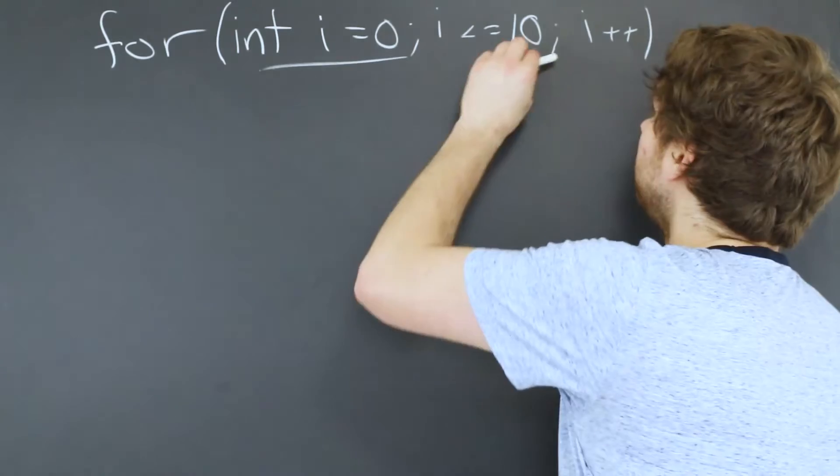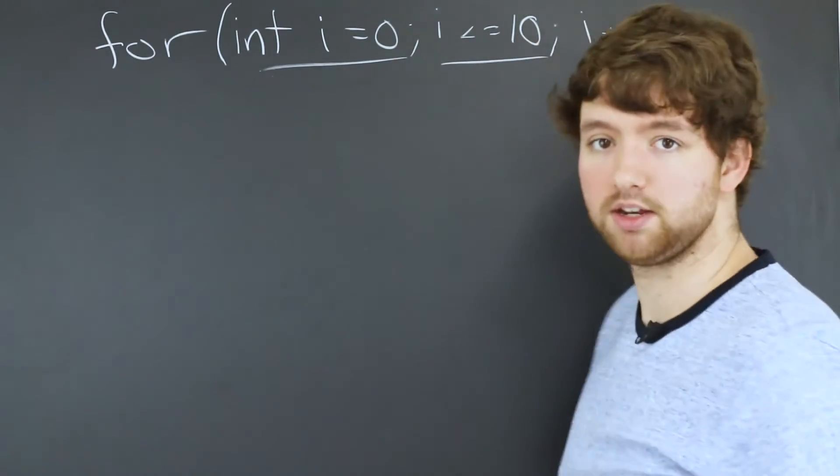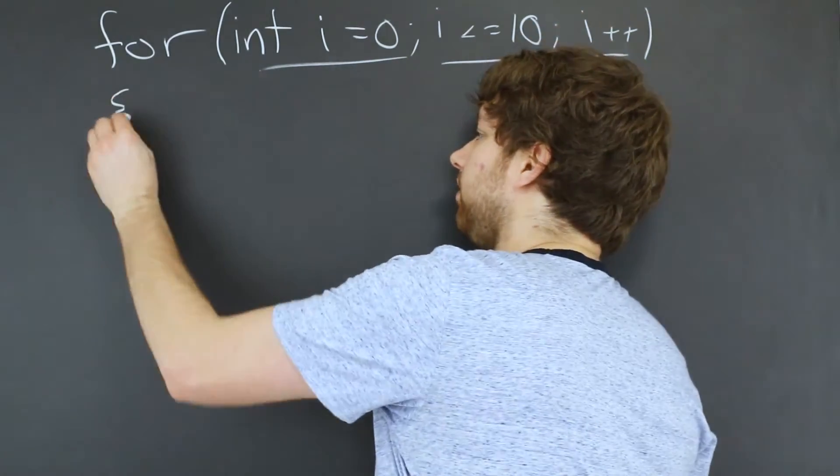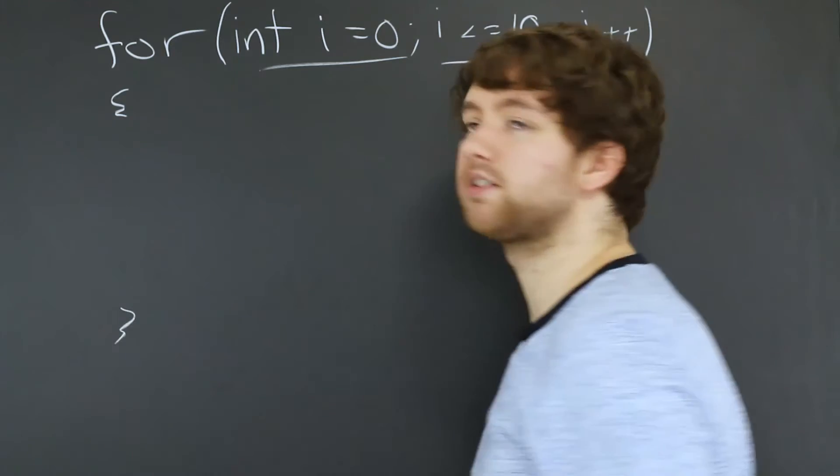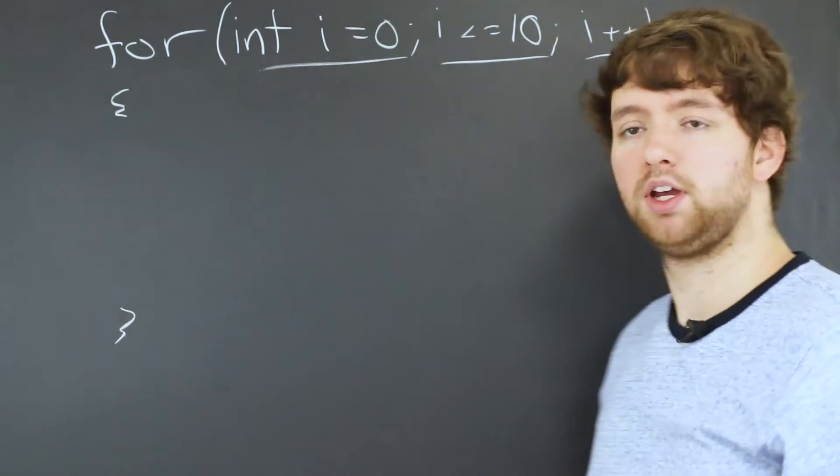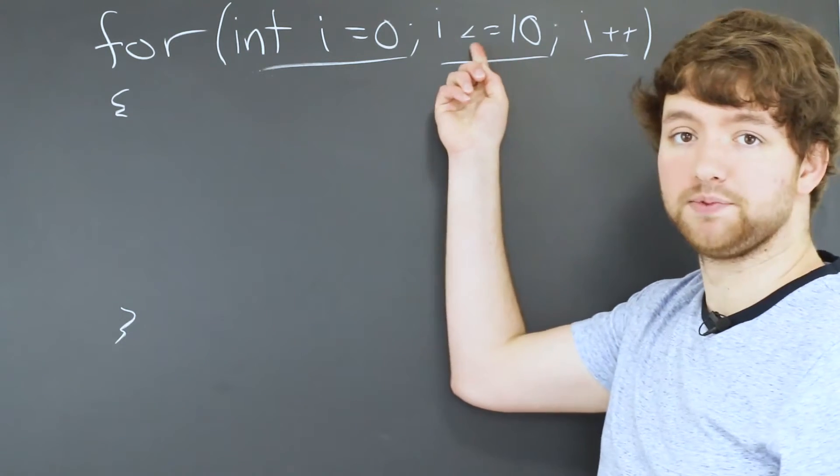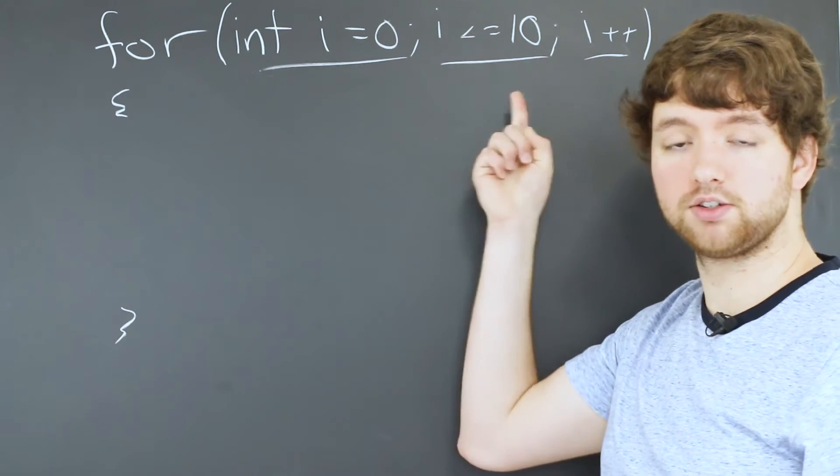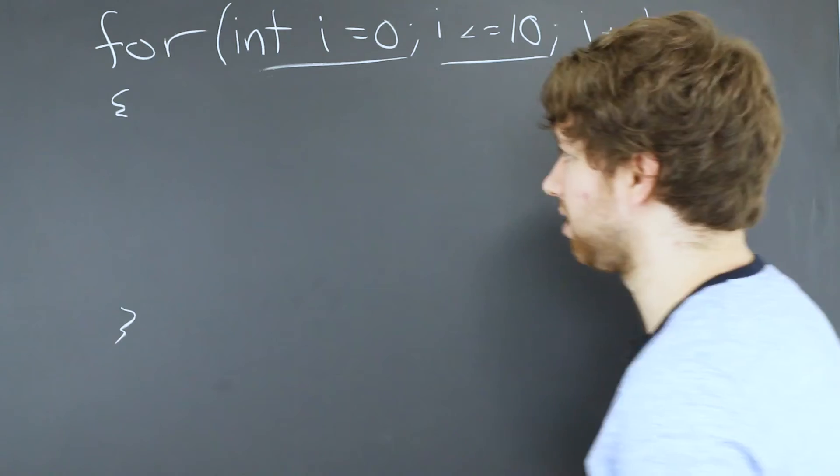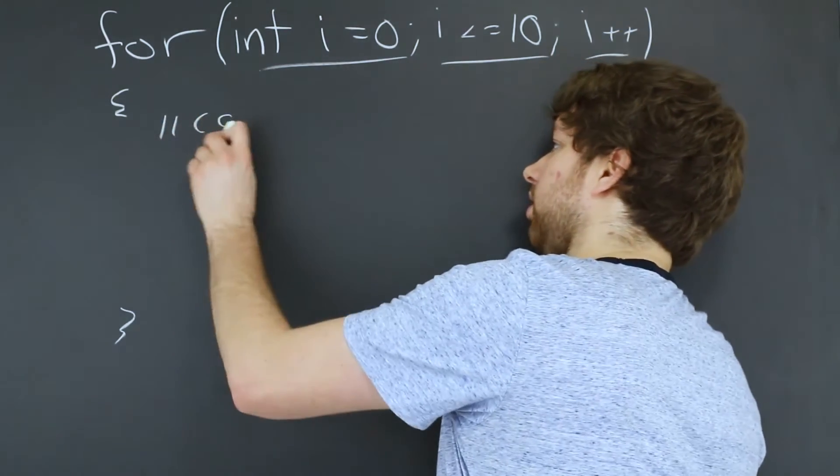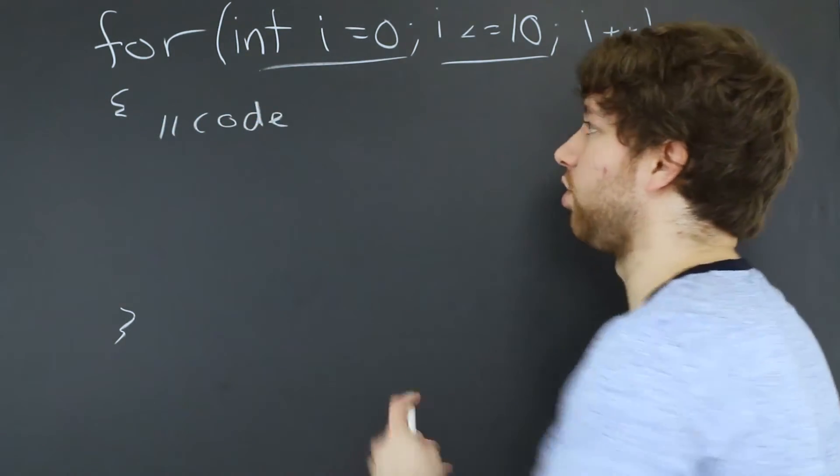Then you have curly braces and this defines what's going to happen 10 times. And this here is what determines how many times we want to loop. So as long as this is true, it's going to execute. So we can put our code in here and we can kind of just go through how this works.